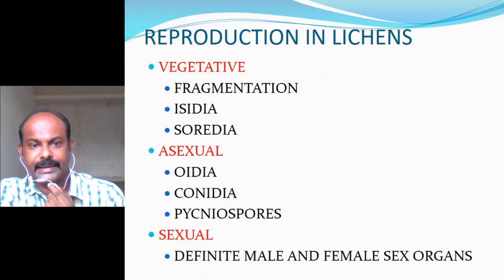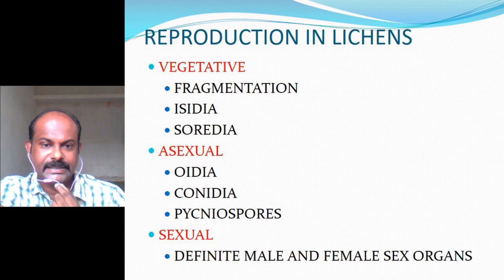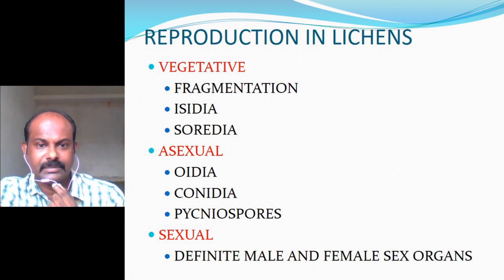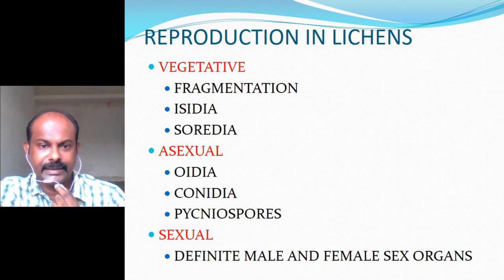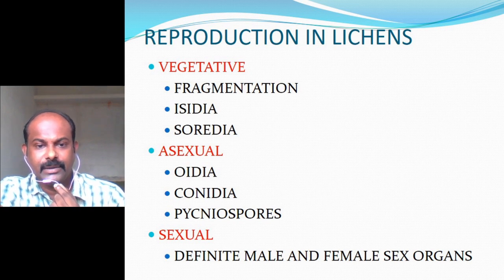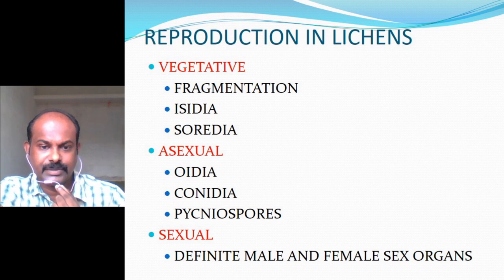Reproduction in lichens can occur by three methods: vegetative, asexual, and sexual. Vegetative reproduction occurs by fragmentation or by means of isidia and soredia. Asexual reproduction takes place by oidia formation, conidia formation, or by the formation of pycniospores.